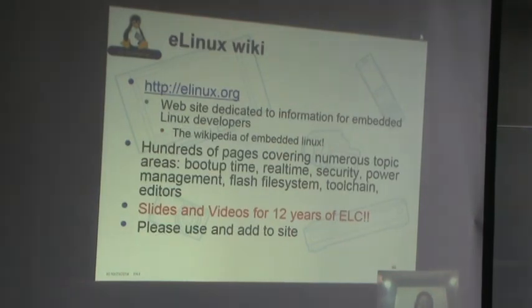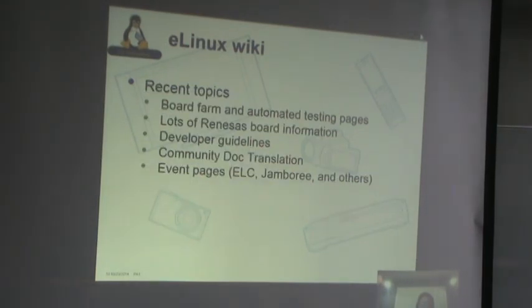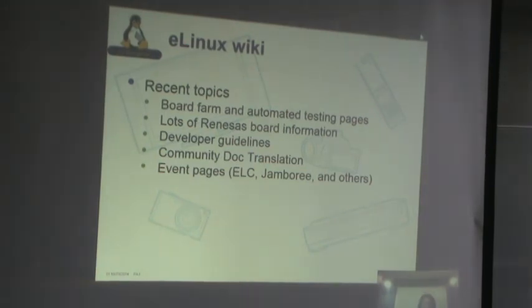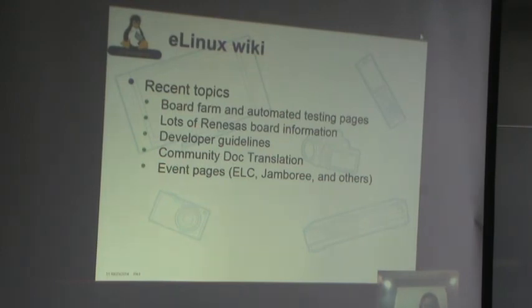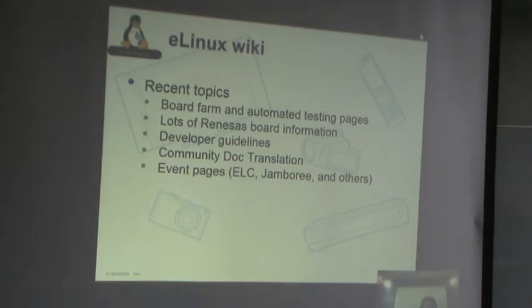The eLinux wiki continues to be used for a lot of things. Some of the material recently added includes board farm and automated testing pages, Renaissance board information, developer guidelines for kernel developers, and community documentation translation pages. There's some Japanese material out there referenced from those pages. Event pages collect presentations and videos from conferences, which is really handy.